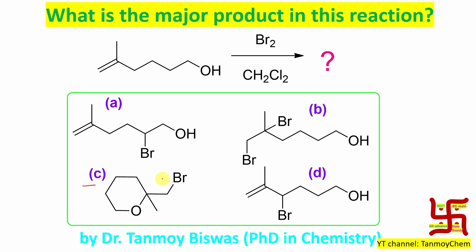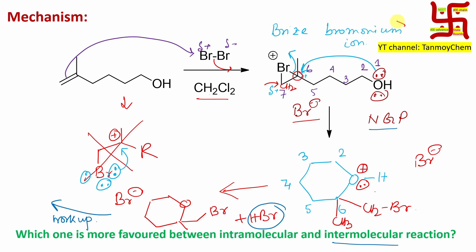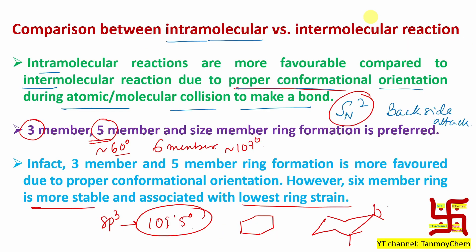Now, if you get this question in your exam, how can you solve it in less than 30 seconds? Possible! I know it apparently looks difficult, but it is possible. We know OH is there and double bond is there, so bromine will react with the double bond — addition reaction will take place. Bromine addition proceeds through a bridge bromonium ion as intermediate — always bridge bromonium, bridge chloronium, bridge iodonium, etc.